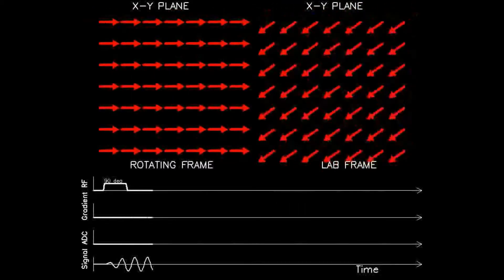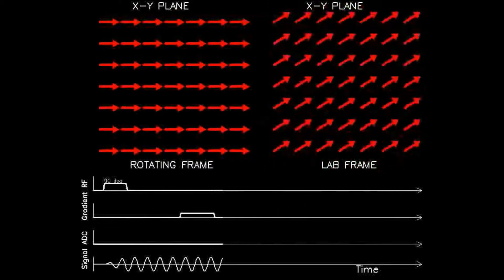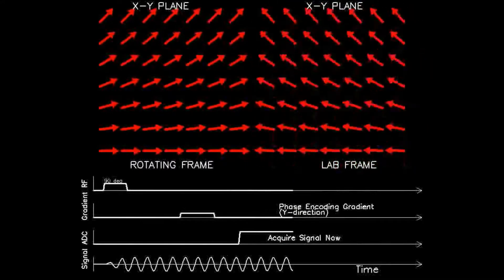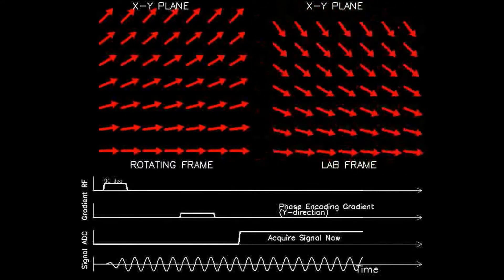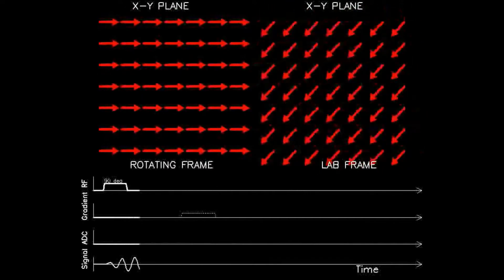During this time, this causes a slight adjustment in precessional frequency such that spins precess with a higher frequency near the top and with a lower frequency near the bottom.